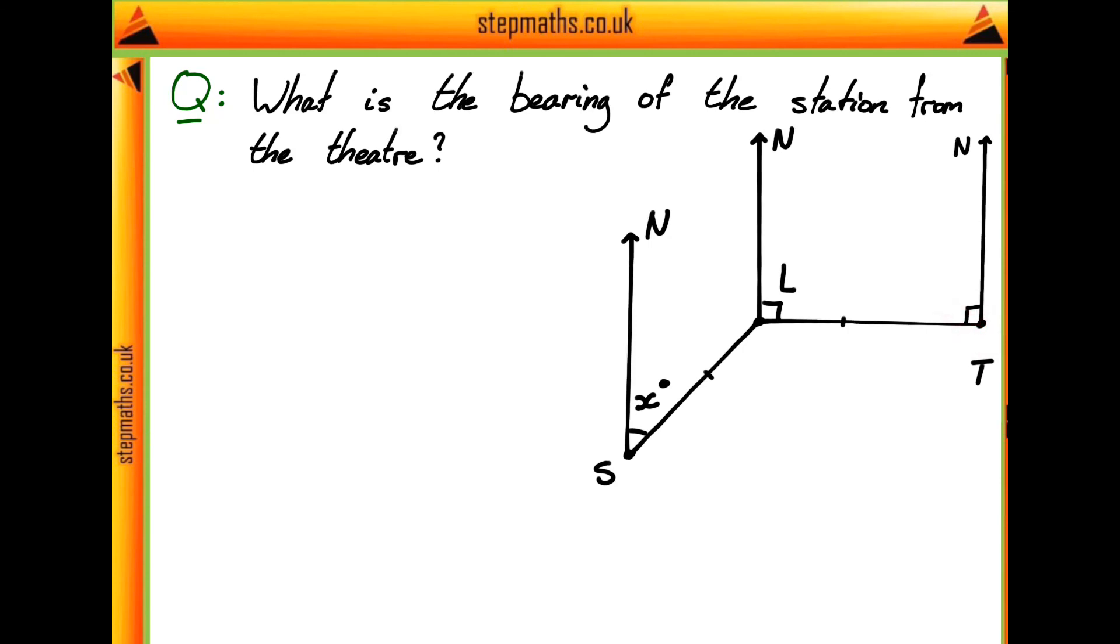So we can label this with an arrow going from the theatre down to the station and our bearing always being measured clockwise from north. You can see as well that I've labeled this angle of y degrees on here. So this is probably going to be quite useful because now we have all of the angles around our point T, our theatre, labeled on properly.